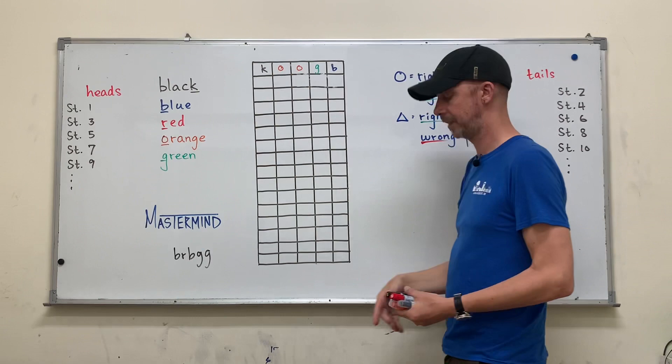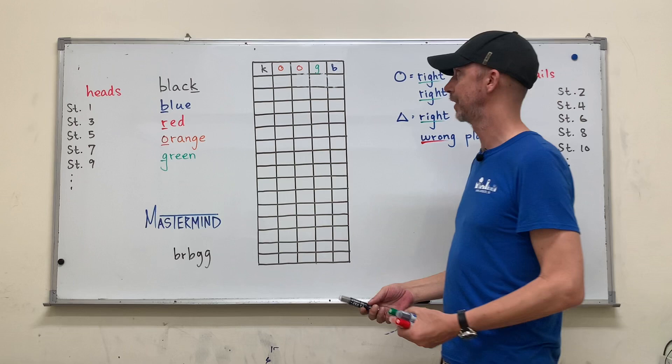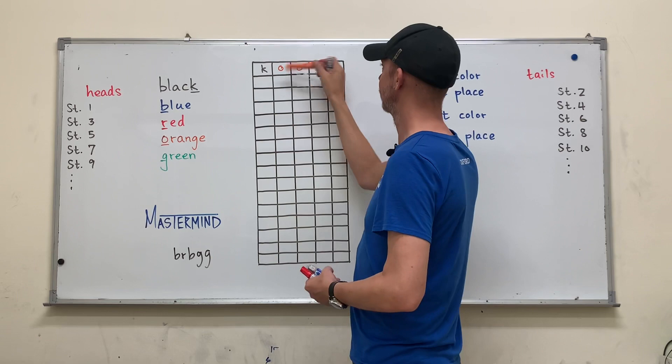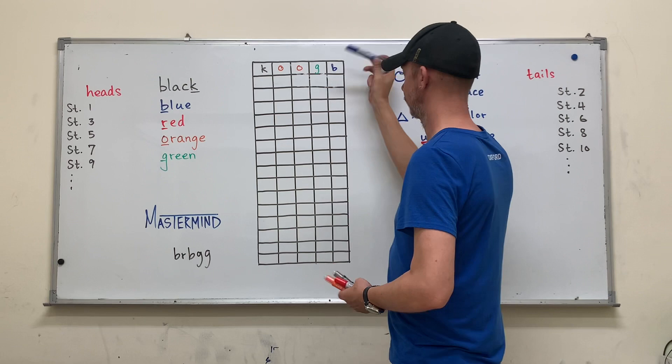So let's say student number one understands how to play the game. I know I'm rushing through the explanation, but they'll guess by saying, uh, black. Okay. I write it orange, orange, orange again, green, and blue. So I write it down. That's their guess.